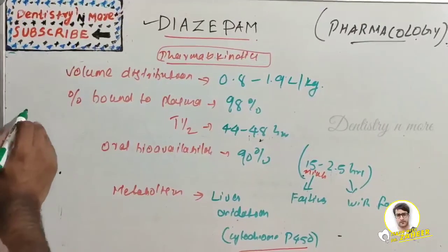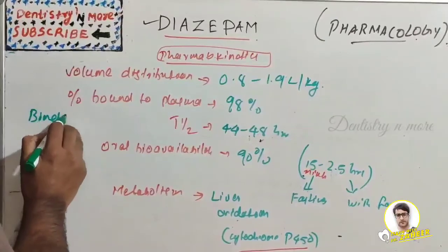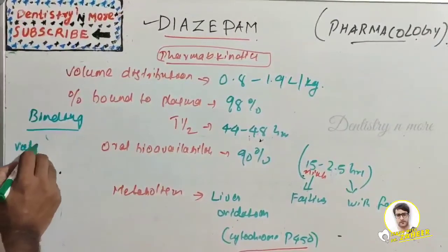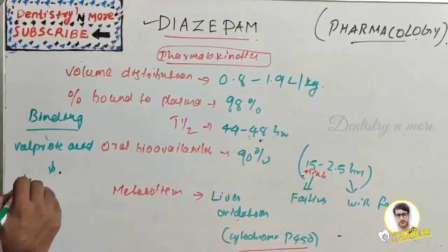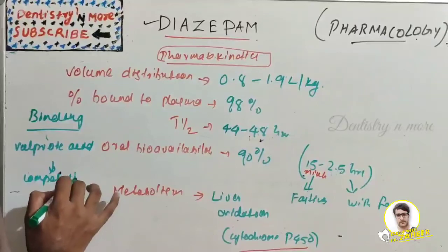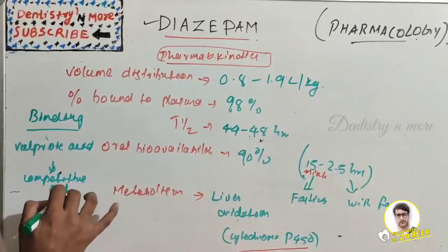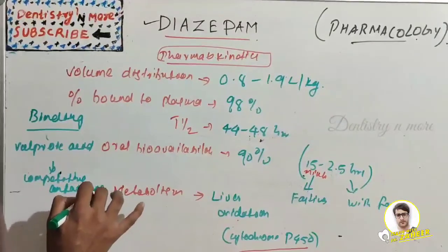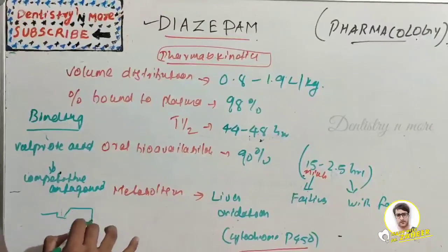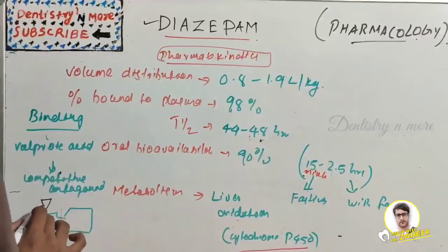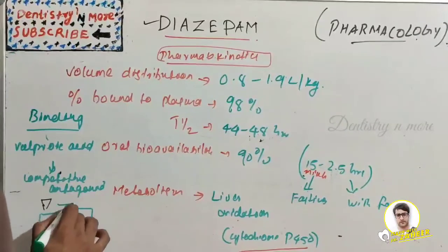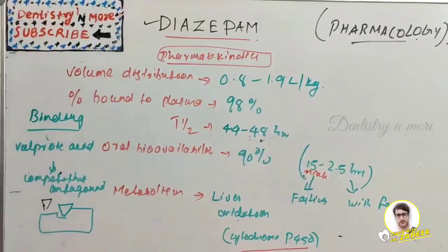Regarding the binding issue, valproic acid acts as a competitive antagonist. It replaces diazepam from the binding sites and attaches to the site itself. This is known as competitive antagonism.